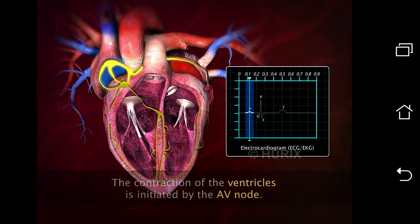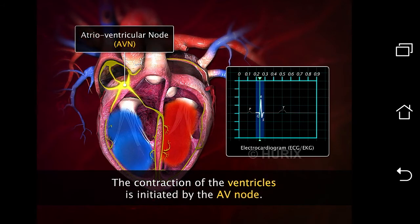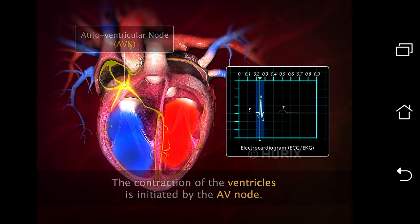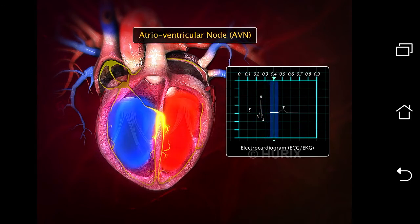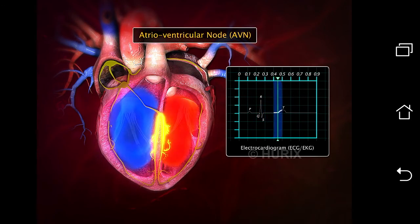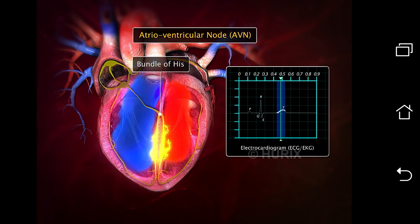The electrical signal continues in another nodal tissue region called the atrioventricular node, or the AV node. After a short delay, the signal travels from the AV node through specialized muscle called the bundle of His and Purkinje fibers, causing the contraction of the ventricles.